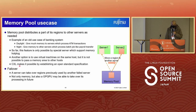Another use case is failover. A server can take over memory regions previously used by another failed server. Not only memory, but a GPGPU may also be able to take over its processing in the future.